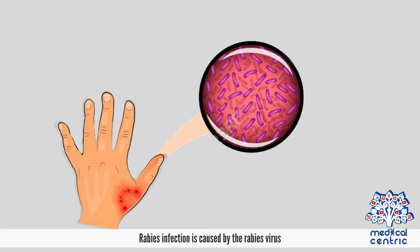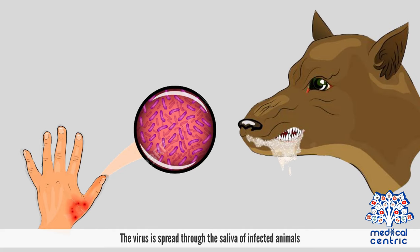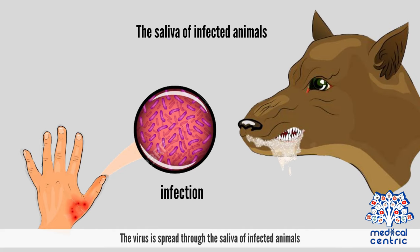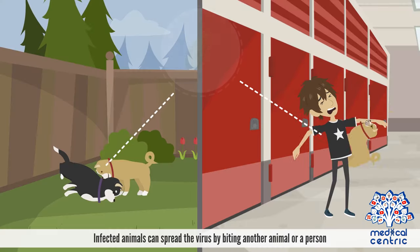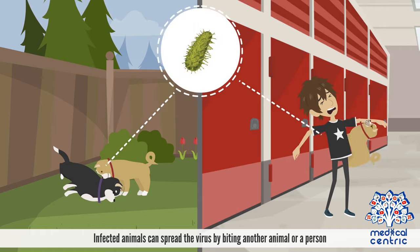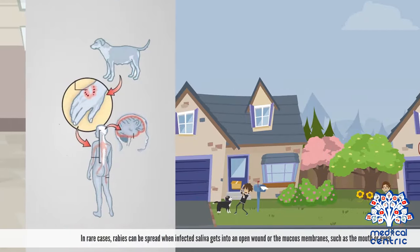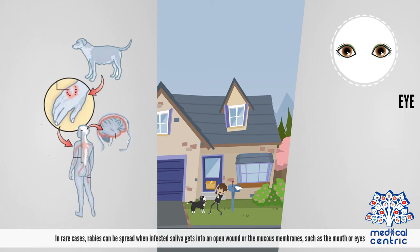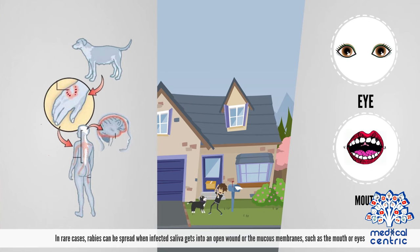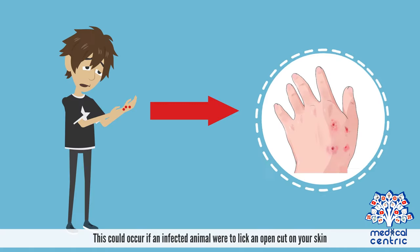Rabies infection is caused by the rabies virus. The virus is spread through the saliva of infected animals. Infected animals can spread the virus by biting another animal or a person. In rare cases, rabies can be spread when infected saliva gets into an open wound or the mucous membranes, such as the mouth or eyes. This could occur if an infected animal were to lick an open cut on your skin.